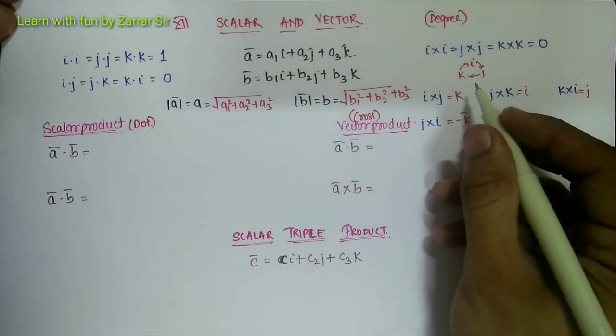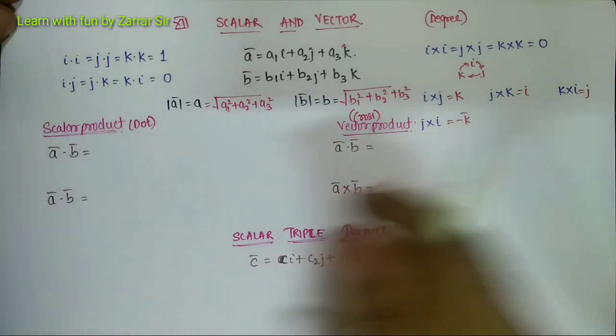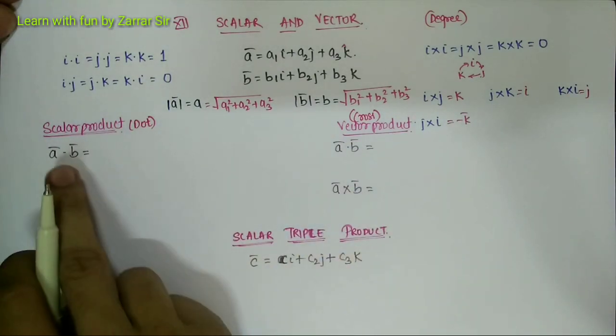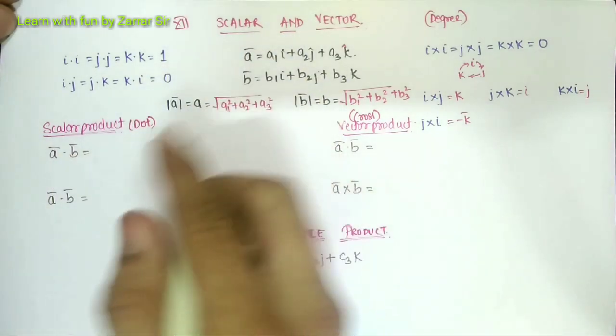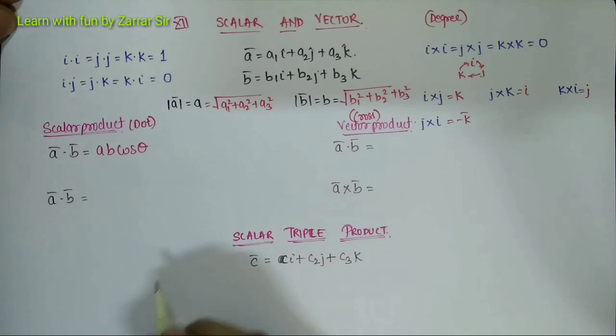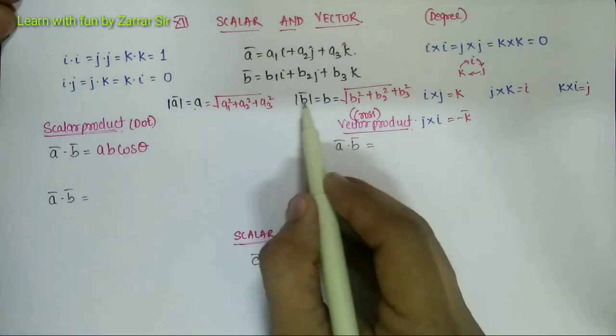Now we'll quickly understand what you mean by dot product and cross product. If there is a vector a bar dot b bar, then it would be a b cos theta. Do remember, where a is the magnitude, b is the magnitude.